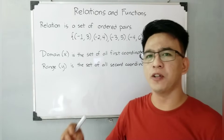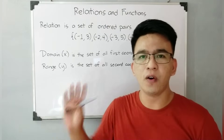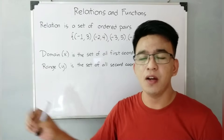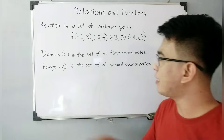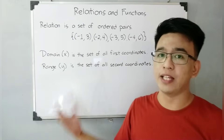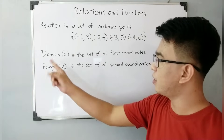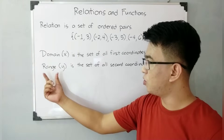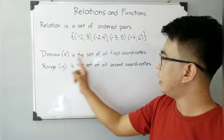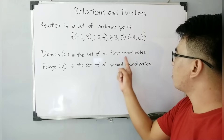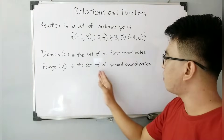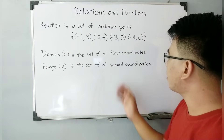Just think of it — when it comes to relation, it is the set of all ordered pairs. Later on in the next part of our video, I will give you the different ways on how to represent a relation. We also have two terminologies: domain and range. Domain, or X, is the set of all first coordinates, while range, Y, is the set of all second coordinates.